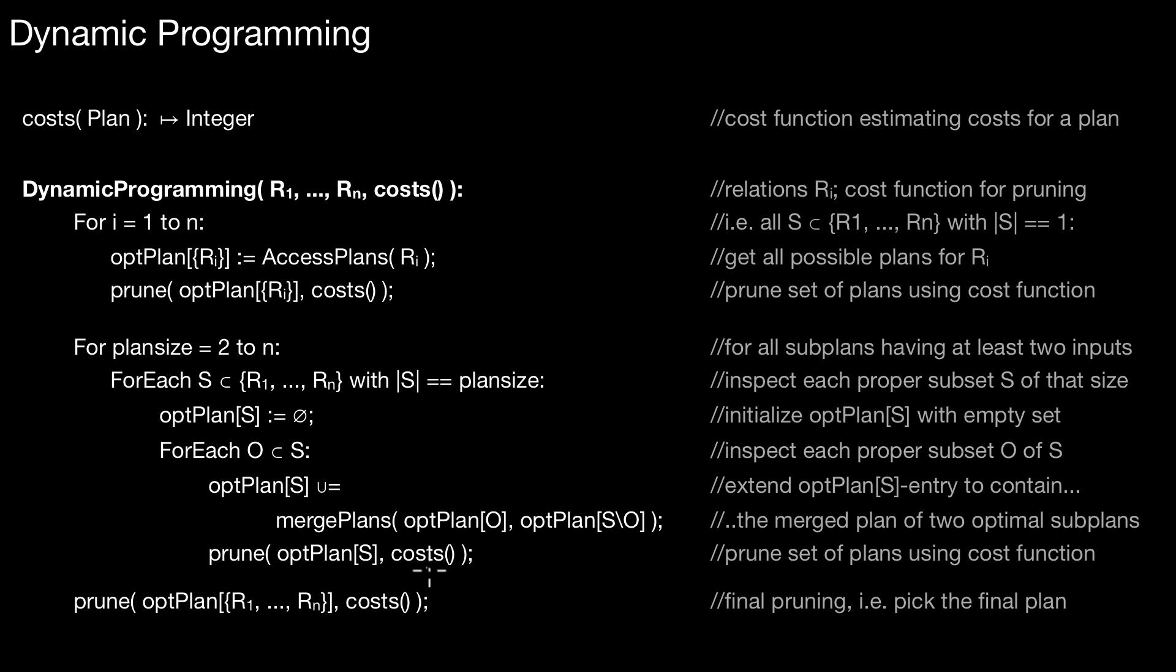In the extreme case, if we ignore interesting orders, what we did in the previous example, in the extreme case where you only keep one optimal subplan, that's what I did in the previous example, then here you only take the entry here with the lowest estimated costs. Only one plan survives. And then you keep on looping over that until this plan size is set to N, which is equal to the final query you're looking at. You do a final prune over that, then you return it, and then you're done. That's the pseudocode for dynamic programming.